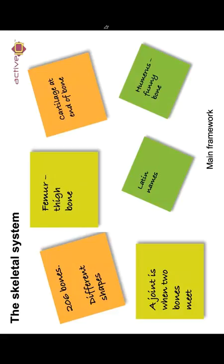The skeletal system has a main framework. In front of you, you can see post-its. These post-its should be little key things that are going to help you with your exams. Writing down little notes, trigger words that are going to help you — such as there are 206 bones in the body, they all have different shapes and sizes. The femur is the thigh bone, the humerus is the funny bone, cartilage is at the end of the bone, and think of those Latin names like we spoke about within the heart in part one.